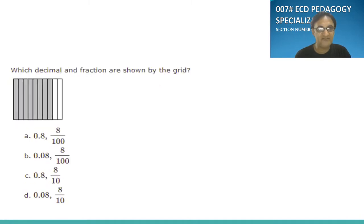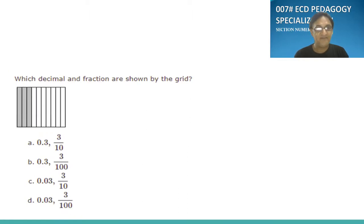Similarly, other question, which decimal and fraction are shown by the grid? It's not 100, it's a 10. So 10 is denominator and numerator is 8. So 0.8. C is the answer for that. Which decimal and fraction are shown by grid? Again, 3 by 10 and the decimal will be 0.3.